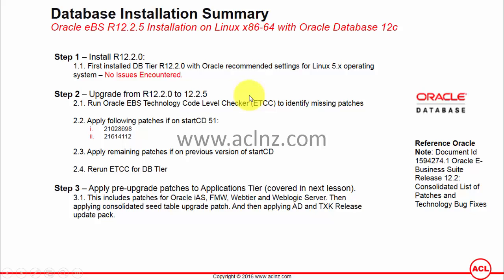Step 1 is to have the base environment in place by installing release 12.2.0. For that, you first install Oracle Linux, apply all kernel-level settings, then launch the RapidWiz installation wizard. The wizard will prompt for database and application tier settings, validate the provided information as well as kernel-level settings, and then you proceed to finish the installation, which can take a couple of hours depending on hardware.